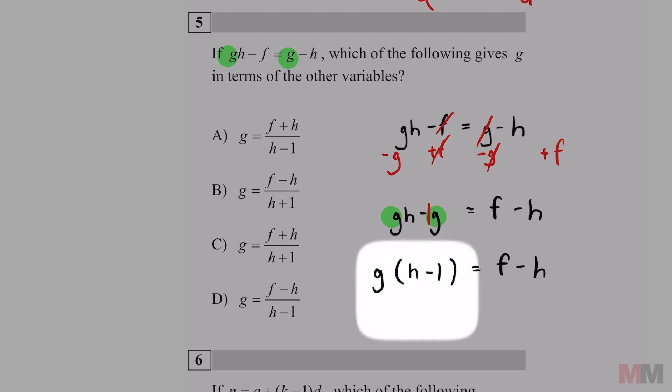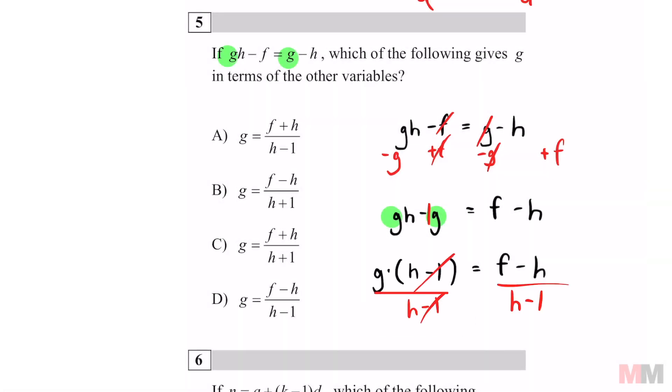That H minus one is being multiplied to your G. So to get rid of it, the final move is just to divide by H minus one. That's going to cancel off. Look at your answer choices.